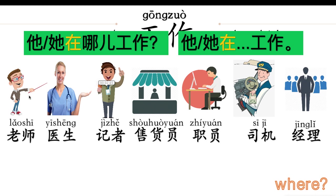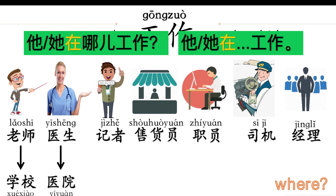Look at the first picture — 老师. 她在哪儿工作? Where does the teacher work? 学校. 她在学校工作. The second picture: 她在哪儿工作? 她在医院工作. 医院, hospital. Third: 她在哪儿工作? 报社工作.